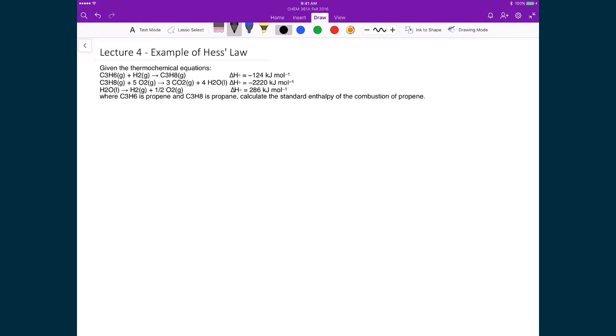This is now going to be an example of the application of Hess's Law for a chemical reaction. What we're given here are three thermochemical equations, but really what the problem is asking is to calculate the standard enthalpy of the combustion of propene, where propene is C₃H₆. So if I were to write down this balanced chemical equation, it would be C₃H₆ as a gas, plus O₂ as a gas, and that then leads me to carbon dioxide and water.